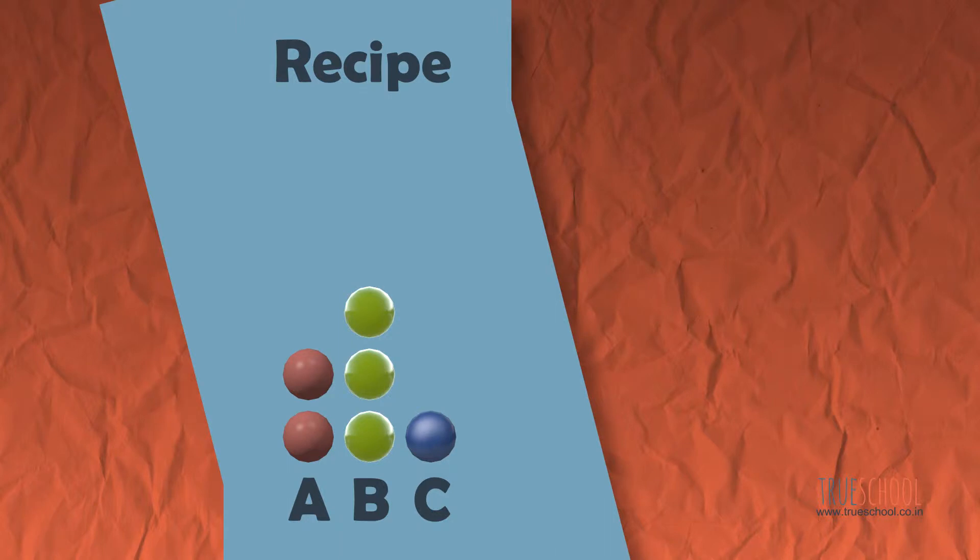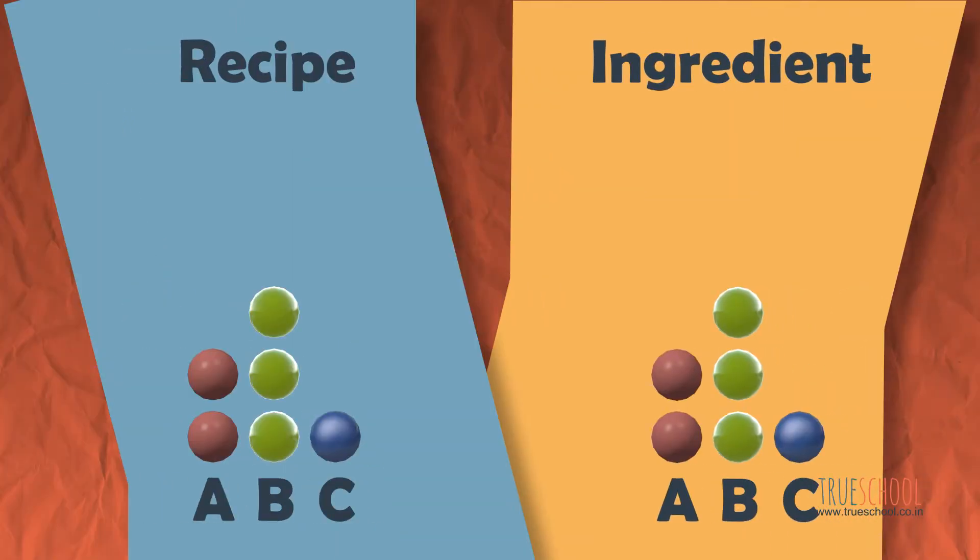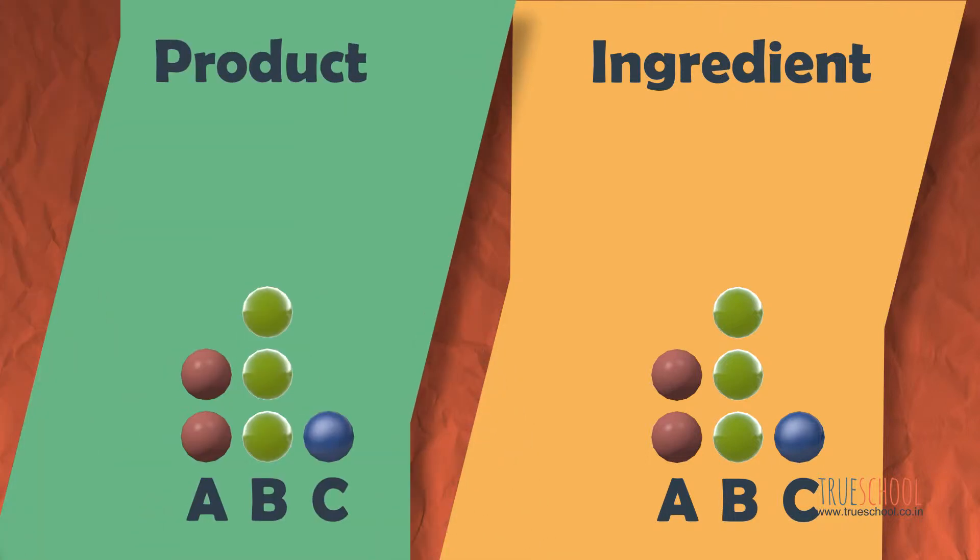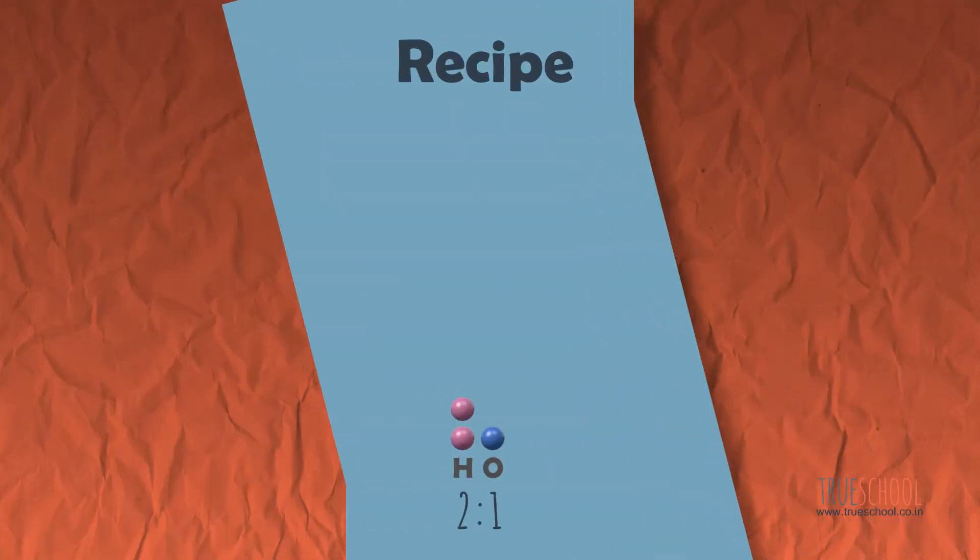It's almost like reading a recipe book. You take a few items, measure them, and mix them in proper proportion to get the product. That's all. This is what we call a chemical reaction. Take the example of H2O - it's made up of two hydrogen atoms and one oxygen atom.